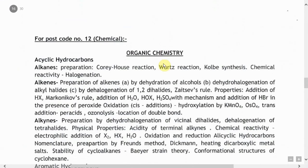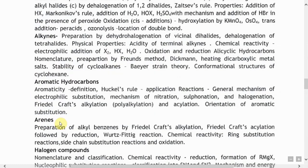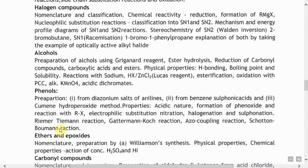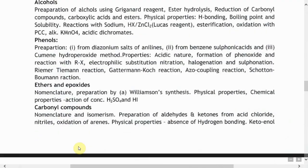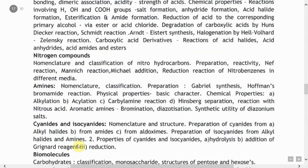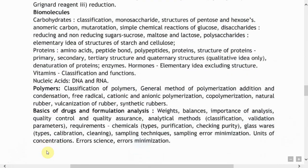For the Chemistry post, under Organic Chemistry: Acyclic Hydrocarbons — that means Alkanes, Alkenes, Alkynes — then Aromatic Hydrocarbons and Arenes, Halogen Compounds, Alcohols, Phenols, Ethers and Epoxides, Carbonyl Compounds, Carboxylic Acids, Nitrogen Compounds, Amines, Cyanides and Isocyanides, Biomolecules, Polymers, and Basics of Drugs and Formulation Analysis.